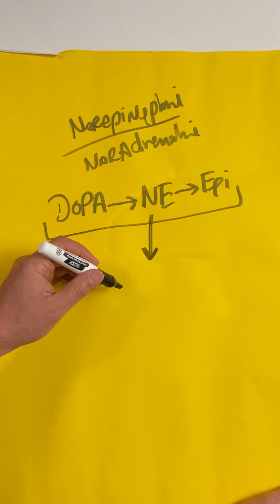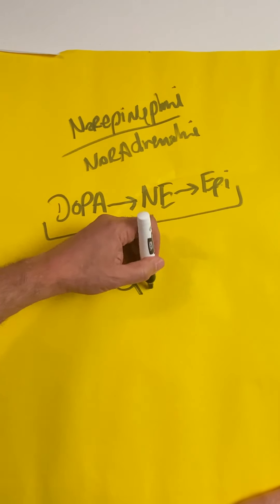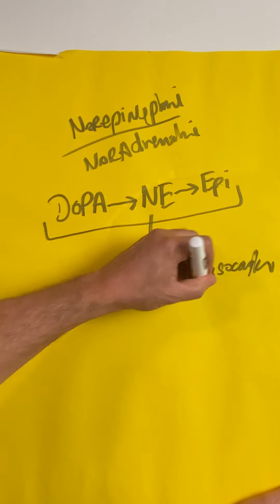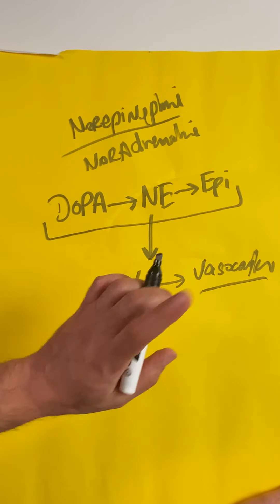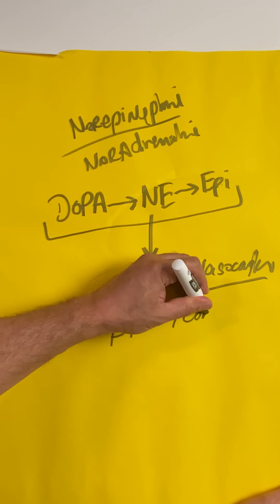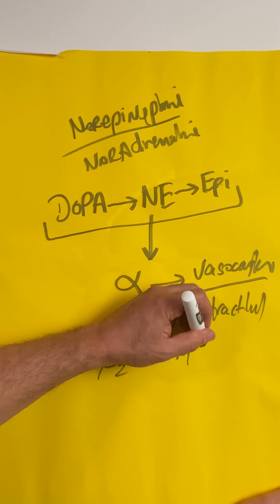Norepinephrine works on a variety of receptors. It works on the alpha receptor—a direct vasoconstrictor that affects the arterial system and also the venous system. It also works on beta-1 to increase contractility and beta-2, which is a smooth muscle relaxer or vasodilator.